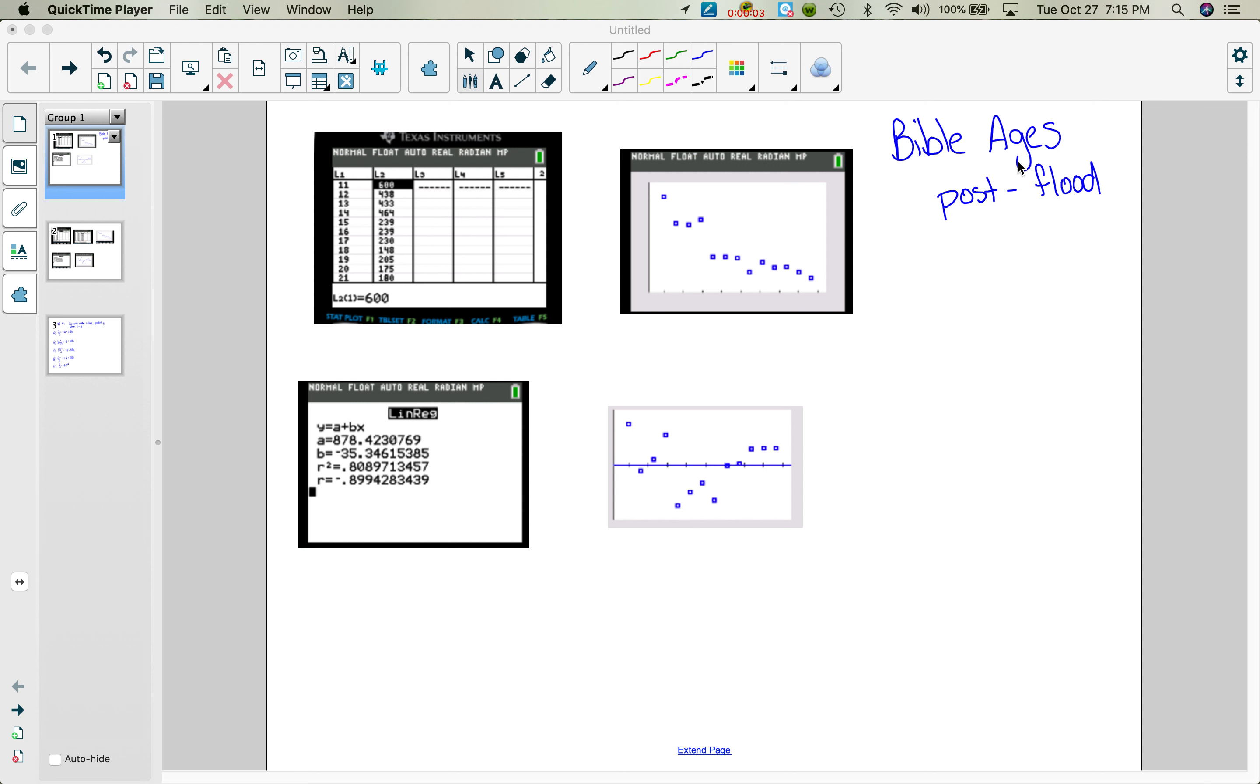Going back to our Bible ages that we looked at in class with the generation versus lifespan, I have omitted everything through Noah so this would all be considered post-flood. So it's generations 11 through 23, and if you don't have it in your calculator anymore, that's okay.